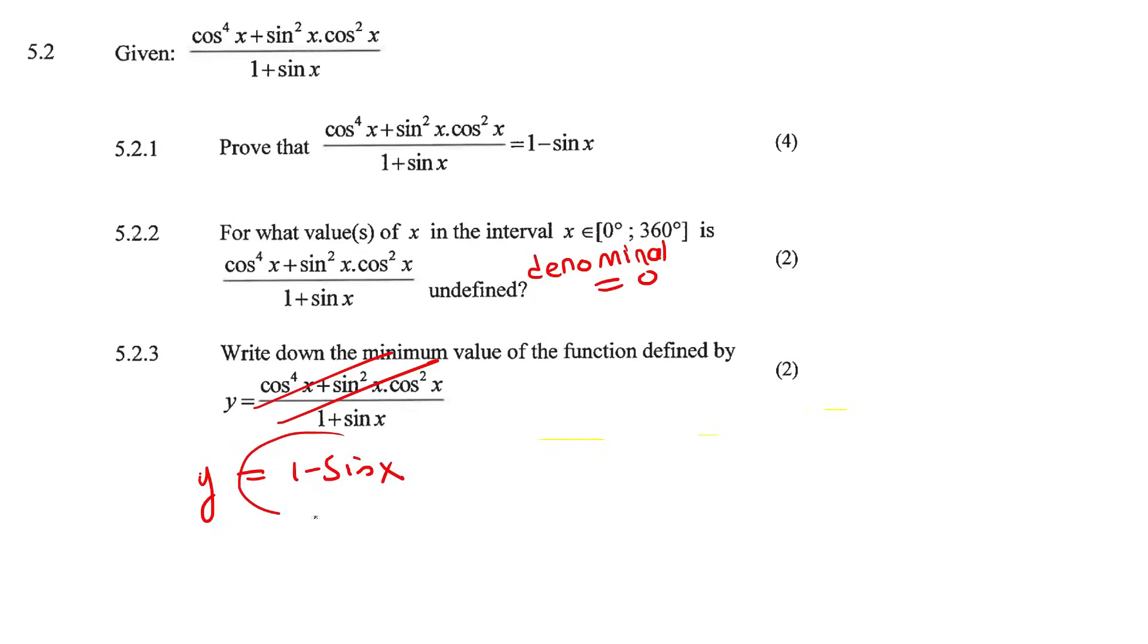They want to know when is this thing a minimum. So you want to make this expression as small as possible. To do that, we would want to make sin x as big as possible, because if you can take this number and minus a big number, then you make this entire expression small. If I look at a normal sin graph, the biggest I could ever make it is when it's equal to 1. So if this is a 1, then it becomes 1 minus 1, and that will then be 0.